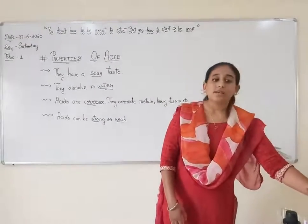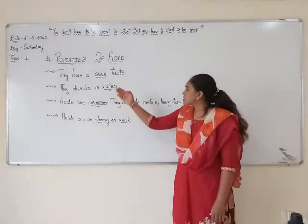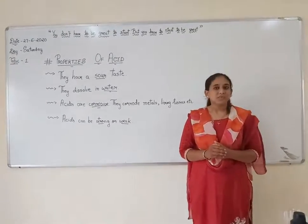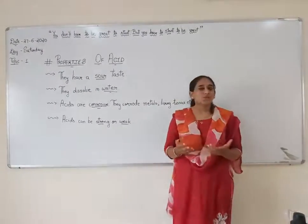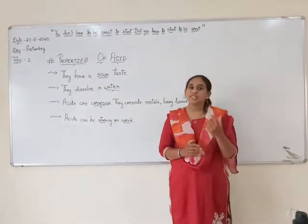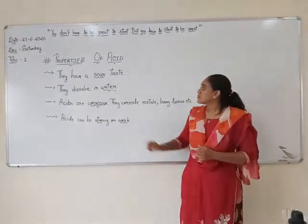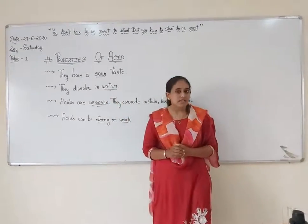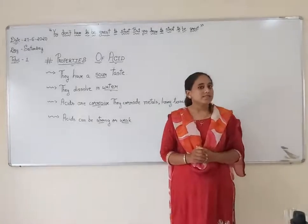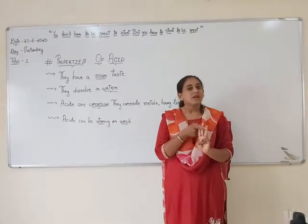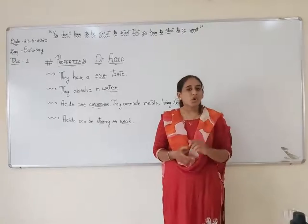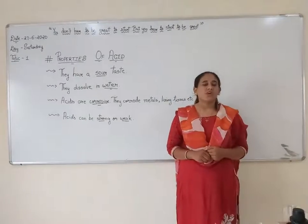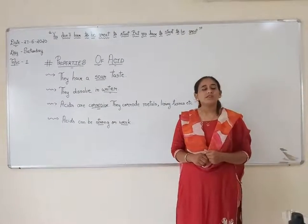Now let us understand the properties of acid. I have written four properties of acid. Let us understand each property one by one. The first property is quite simple. When I showed you the lemon and defined acid, we were quite clear about the taste — acids have a sour taste. Whether it is lemon, tamarind, or amla, they all have a sour taste. That is the first property of acid.